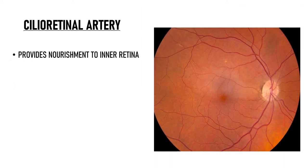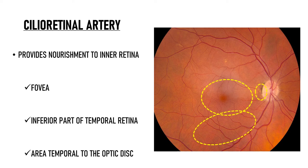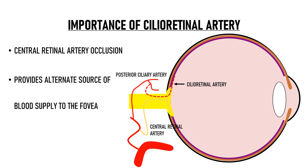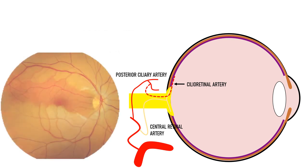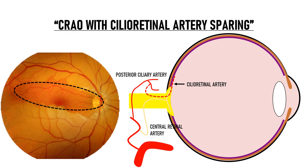The cilioretinal artery provides nourishment to the inner retina, commonly supplying the fovea, sometimes the inferior temporal retina, or just a small area temporal to the optic disc. Its importance is evident in central retinal artery occlusion, where the presence of a cilioretinal artery can prevent severe vision loss by providing an alternate blood supply to the fovea. In this picture, the whole retina is opaque due to ischemia except for the small area around the fovea, supplied by the cilioretinal artery arising from the posterior ciliary circulation. Because the cilioretinal artery is patent, this patient would have good central visual acuity — a condition called CRAO with cilioretinal artery sparing.